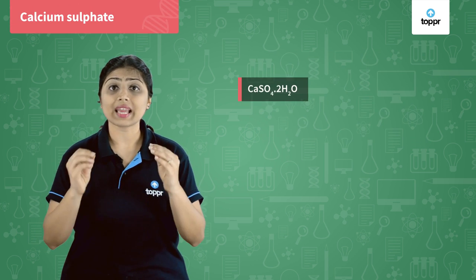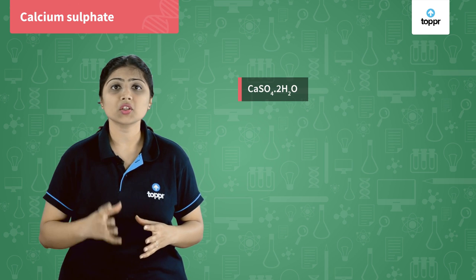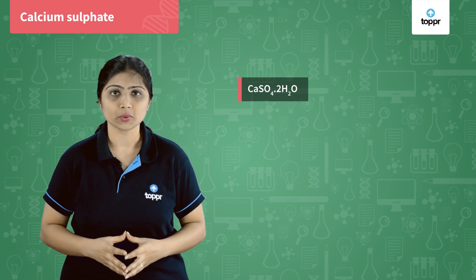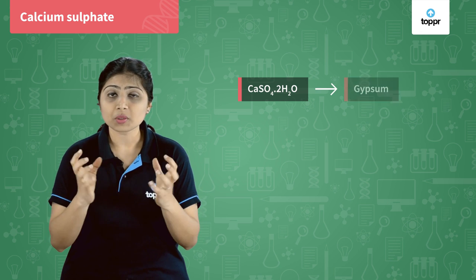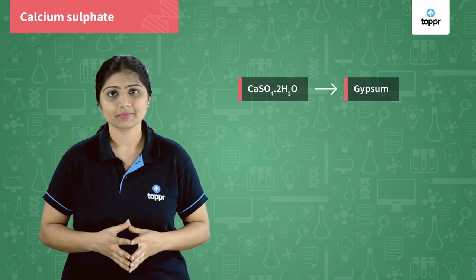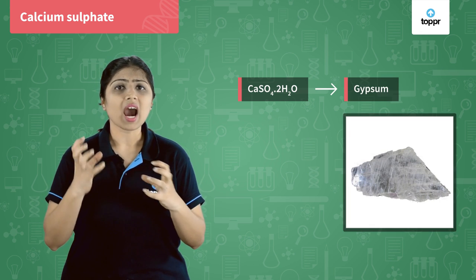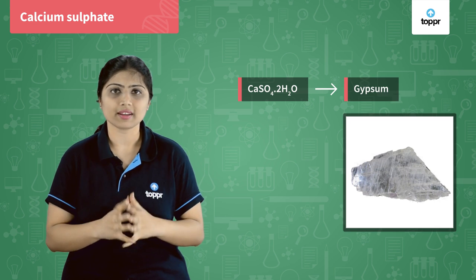Let's talk about the salt calcium sulphate. When one molecule of calcium sulphate is attached to two water molecules, the salt is known as gypsum. Gypsum is a very hard substance which is white in colour.